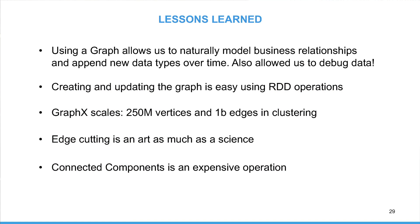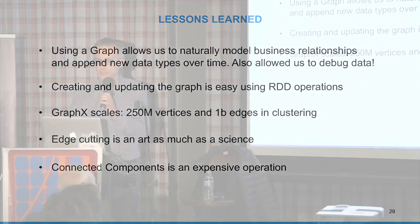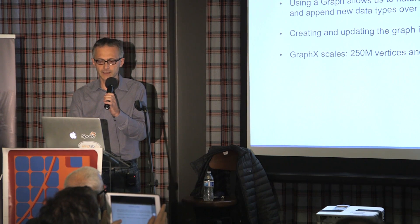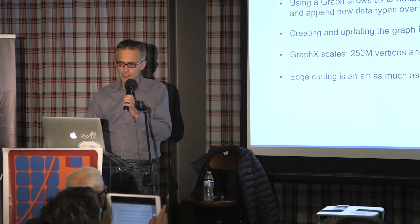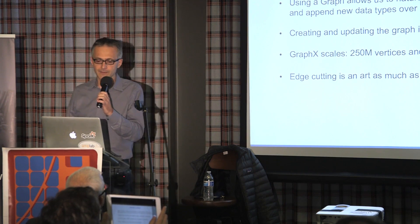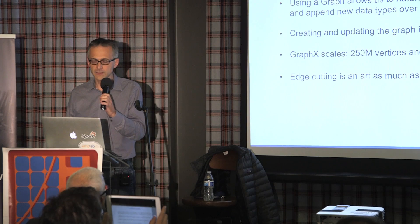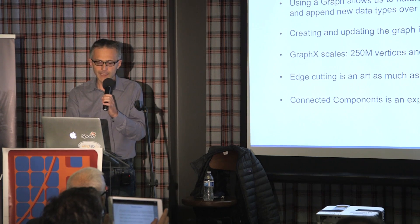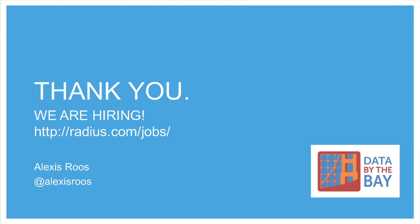A few lessons learned: using a graph is a very intuitive and natural way to model relationships — the world is connected and looks like a graph. New technology like GraphX makes it very easy to explore the graph. Creating a graph through RDD operations is very simple and very scalable — in our case we use over 250 million vertices and 1 billion edges in the clustering step. Edge cutting is always more of an art than a science, with constant work to improve the heuristics for how we create the graph. Connected component in GraphX is a separation challenge, but if you take care of it, it can complete pretty fast on a large cluster.